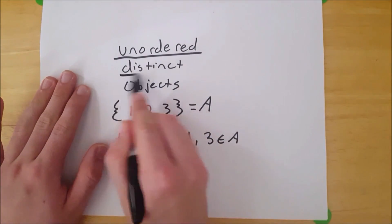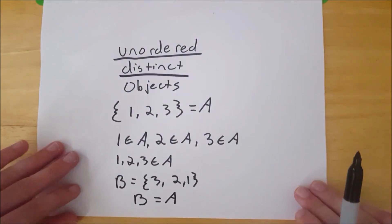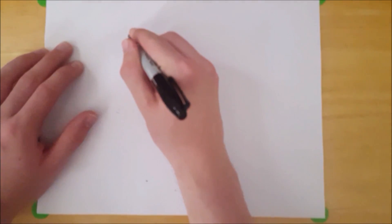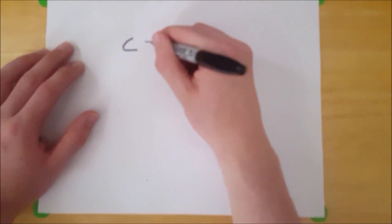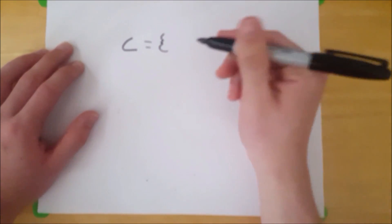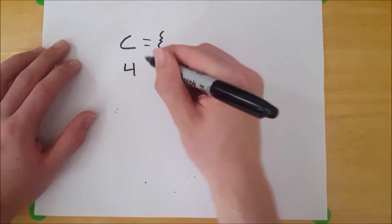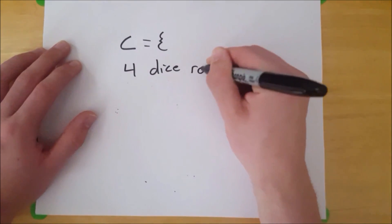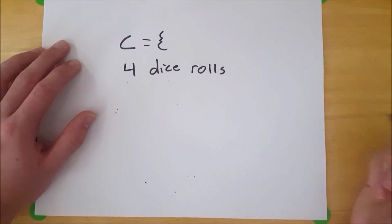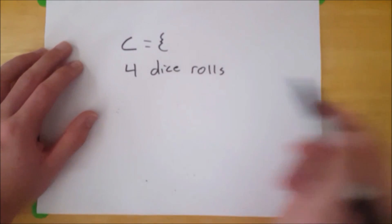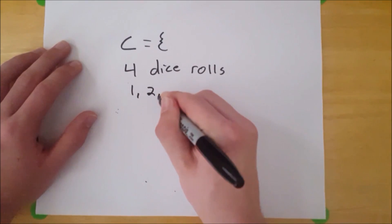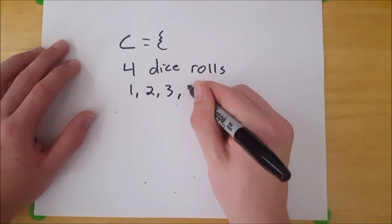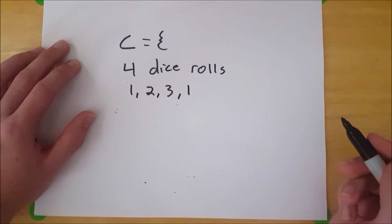Now let's talk about the next keyword, distinct. What does that mean? Well, suppose we have another set. Let's call this set C. And C is going to equal the set which contains the numbers that we get from four dice rolls. So we're going to roll a dice four times, and whatever numbers we get are going to form our set C. So let's suppose we roll a one, then we roll a two, and then we roll a three, and then we roll a one.